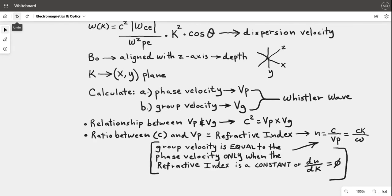Next we have the ratio between the speed of light c and vp, which equals the refractive index n, which is the speed of light divided into the phase velocity, equal to c times the wave function divided into the frequency. You have a group velocity equal to the phase velocity only when the refractive index is constant or the derivative of the refractive index with respect to the wave function has no rate of change, so its rate of change is zero.